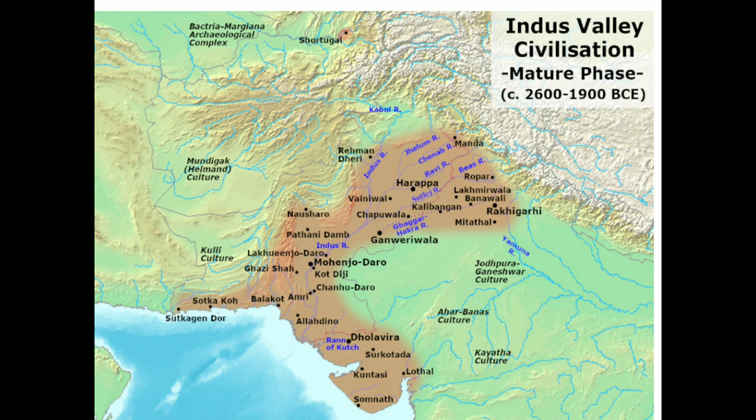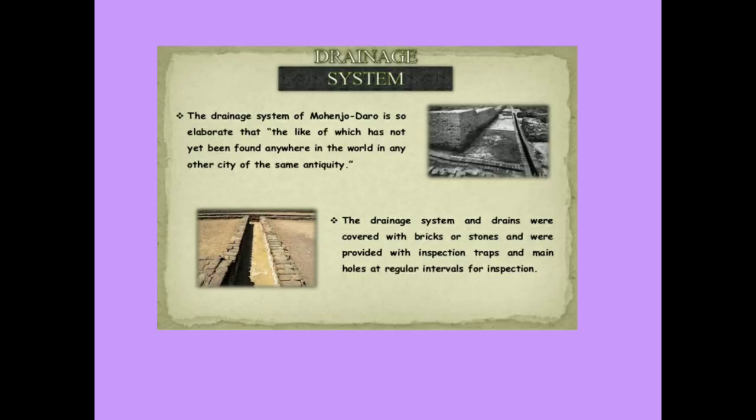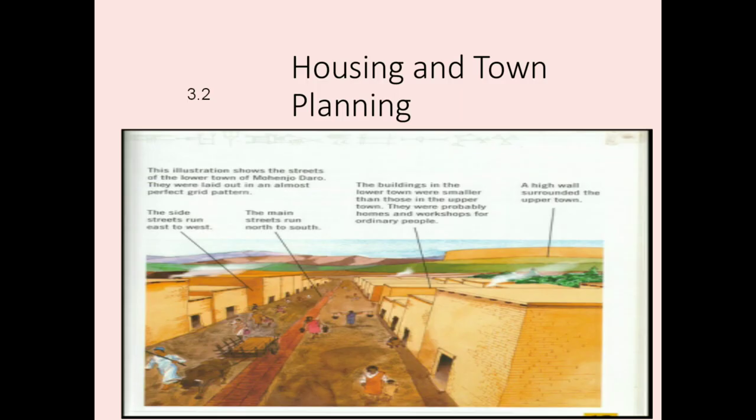Excavations were also carried out at Mohenjo-daro, a place about 650 km south of Harappa in the Indus Valley. There was a striking resemblance within the remains of the structures and artifacts found at both places. Similar remains have been found in Dholavira, Lothal, Kalibangan, Daimabad, and more. Moving to Unit 3.2: Housing and Town Planning.